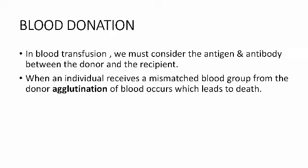When an individual receives a mismatched blood group from the donor, agglutination of blood occurs. If a person receives the wrong blood group, it can be life-threatening. Agglutination means clumping of particles — it is a Latin word. When the antigen mixes with the antibody, it leads to death. This is called agglutination.